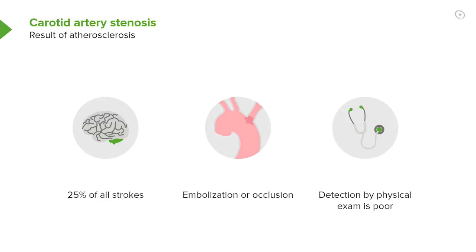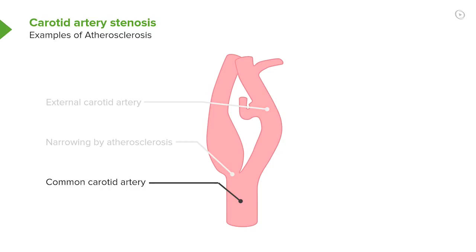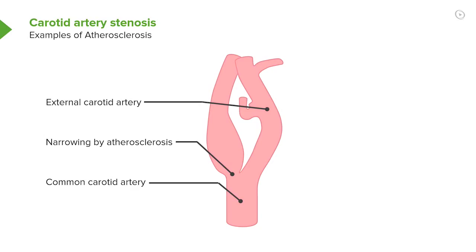The only way to detect it is usually with an ultrasound examination. You can see in this cartoon there's a narrowing in the carotid artery, which if it became severe, patients might start to have symptoms — brief symptoms where they lose their ability to speak, or where their hand becomes lame or numb, and then it gets better.